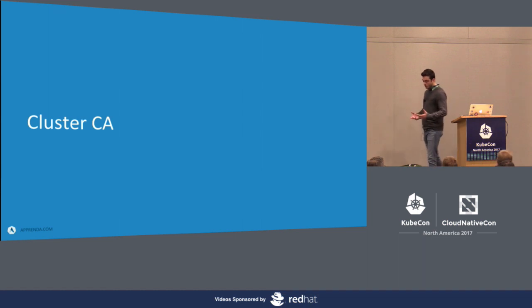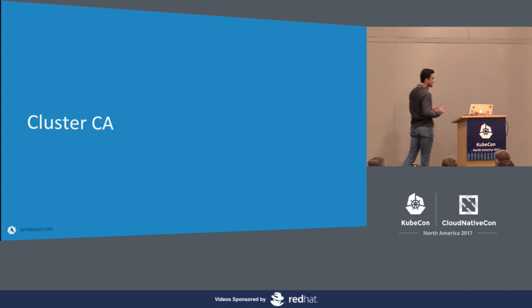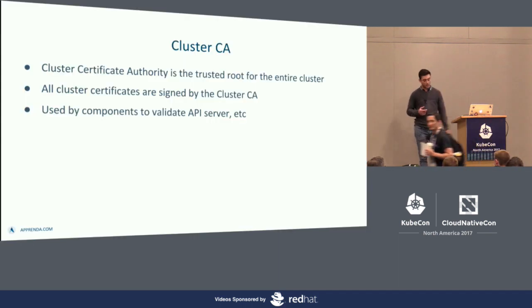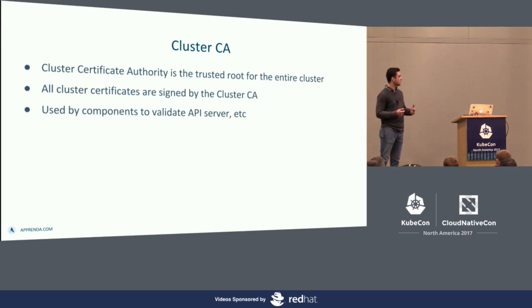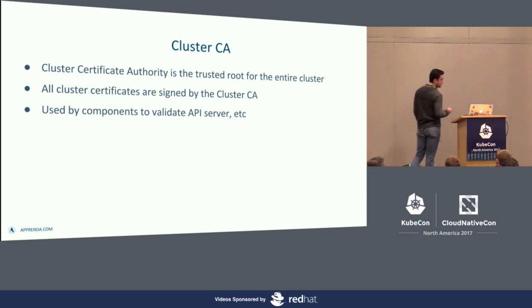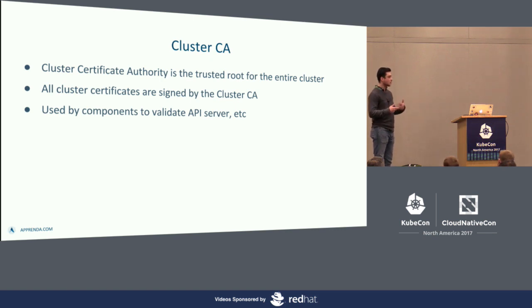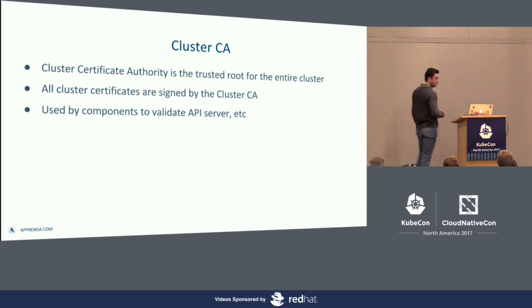To build a secure cluster using certificates, the first thing we need is a cluster certificate authority. The cluster certificate authority is going to be the trusted root throughout the entire cluster. All the certificates used in the cluster are going to be signed by the cluster CA, and this is what enables all the components to authenticate each other. All the components are going to trust that CA, and whenever they're presented with a certificate, they can trust it because it's been signed by the CA.